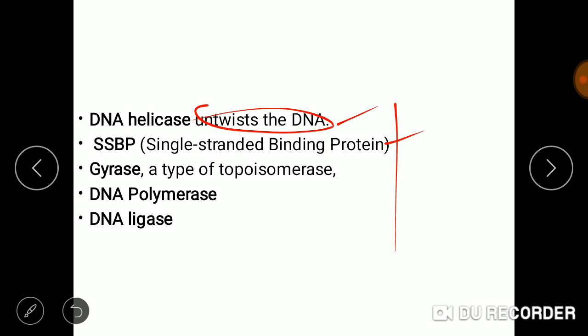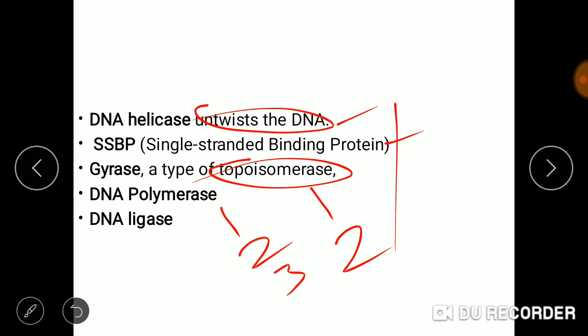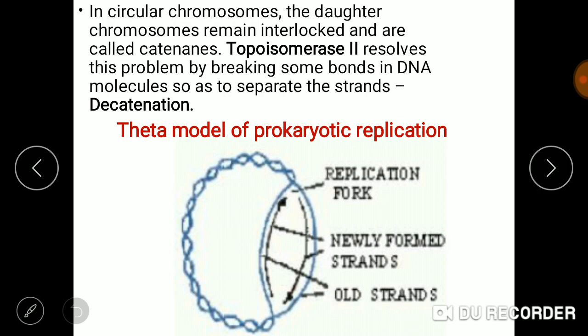Another protein is topoisomerase — there are two types, topoisomerase I and topoisomerase II. Then DNA polymerase I, II, and III each play a key role. DNA ligase seals or joins the formed Okazaki fragments — these Okazaki fragments are sealed by DNA ligase.